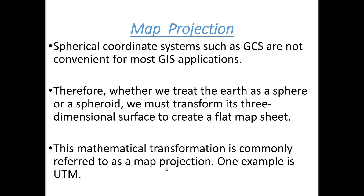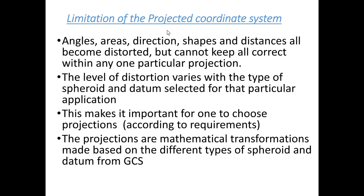Mathematical transformation of the three-dimensional into two-dimensional is map projection. This is the map projection. The angle of the map projection — direction, slope, and distance — can be distorted, but certain properties can be kept correct within any particular projection. The type of projection and the area of preservation will determine which properties are distorted.